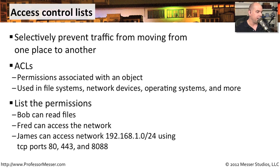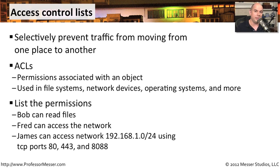We can usually see ACLs implemented in these types of ways. Maybe we want to allow Bob to read the files, but he can't do anything else to the files on a file server. Maybe give access to the network to Fred, or limit access to other people going across the network. Here's an ACL with a lot of different variables: James can access network 192.168.1.0 with a 24-bit subnet mask using TCP ports 80, 443, and 8088. That access control list gives access to all devices on that subnet, but only using those port numbers. If I tried to use any other port number to access that network, I would not have permission based on that particular ACL.